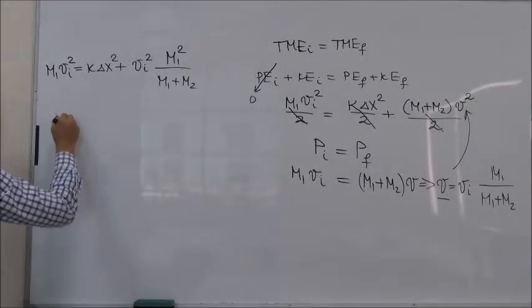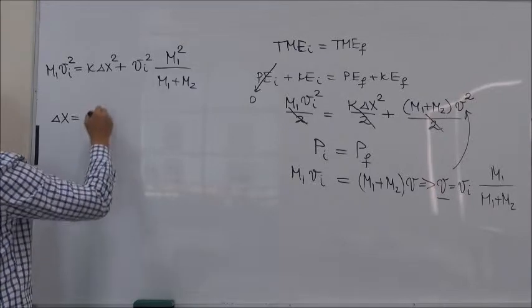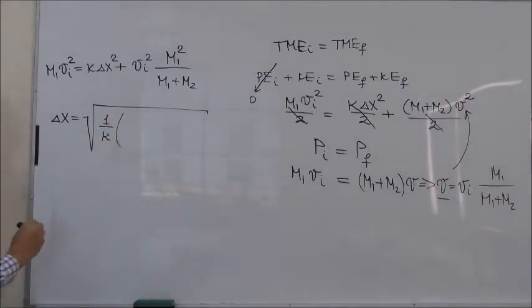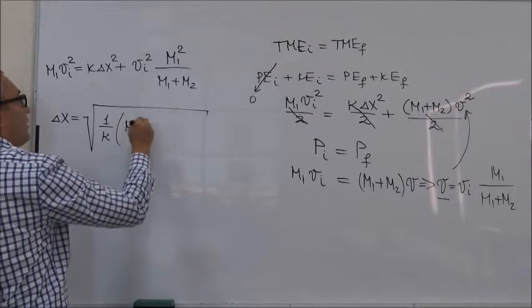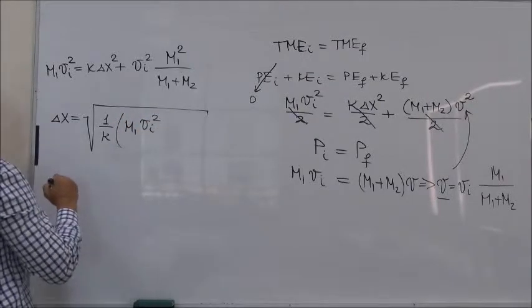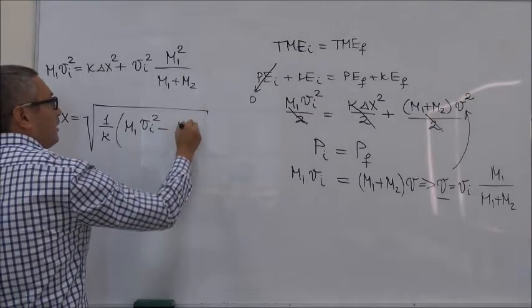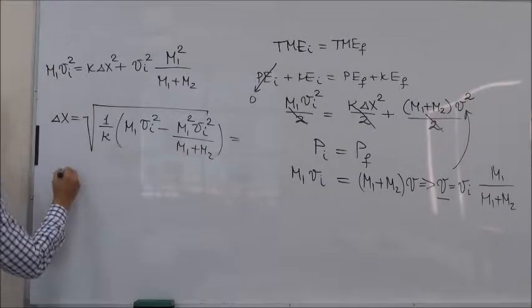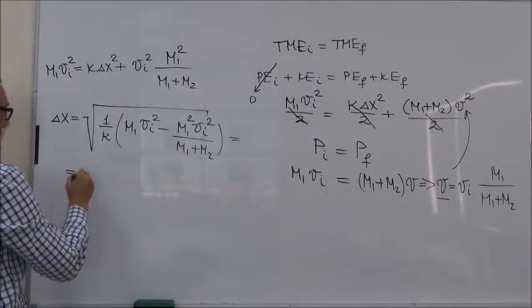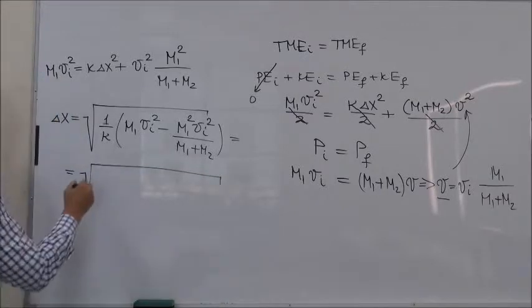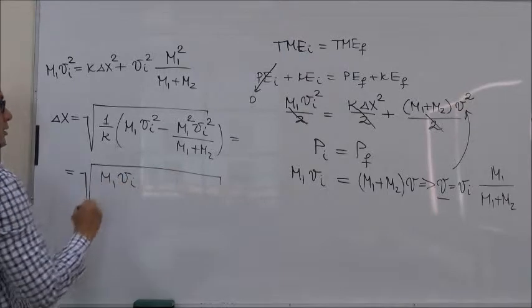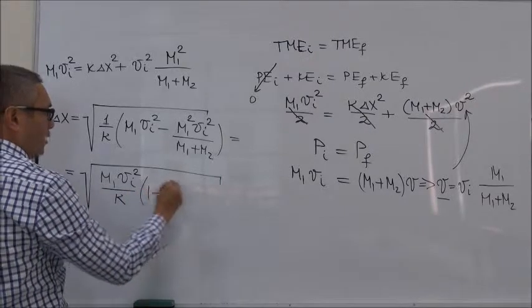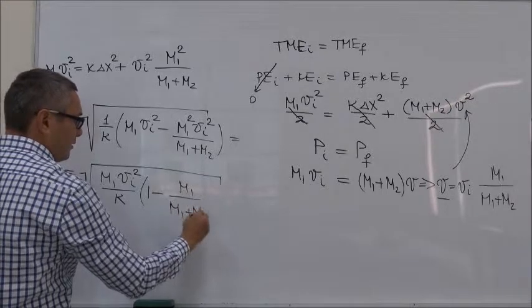So delta X is therefore equal to square root 1 over K, M1 V initial squared minus M1 squared V initial squared over M1 plus M2. So let's make this a little tidier, so you have square root M1 V initial squared over K, 1 minus M1 over M1 plus M2.